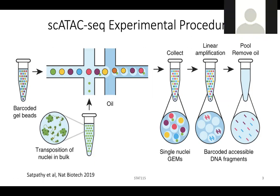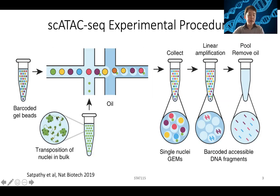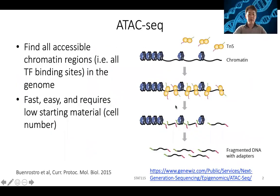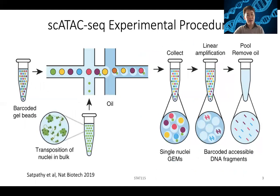The transposase cuts but you don't have the fragments yet — otherwise, how would you figure out which fragments belong to which cell? It only cuts and inserts different sequences inside. When it cuts, it just inserts the sequence. It's during the amplification that, because the adapters are inserted with the cut, only the short fragments will get amplified. The barcodes are then attached to the end of the amplified fragment.